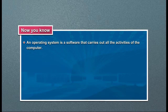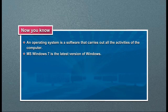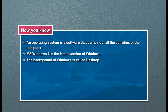An operating system is a software that carries out all the activities of the computer. MS Windows 7 is the latest version of Windows. The background of Windows is called Desktop.